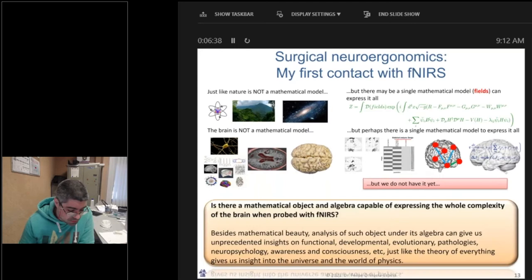Back to fNIRS now. Just like nature is not a mathematical model, but there may be a single mathematical model that can express it all, in that case with vector fields, neither is the brain a mathematical model, but perhaps there may be a single mathematical model, whether with vector fields or other, that can express it all. It is just that we do not have it yet. So going back to my fNIRS research, I got driven by the search of such mathematical model that provides us with the ultimate understanding of brain function, as interrogated by fNIRS, and besides, maybe of a spectacular mathematical beauty.